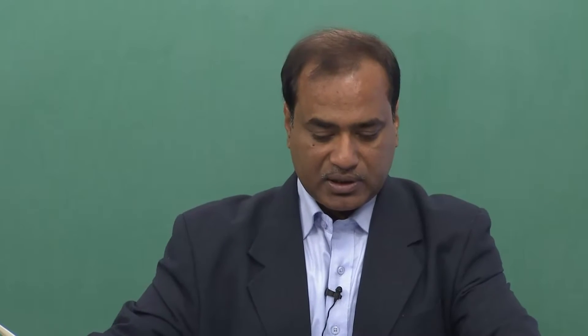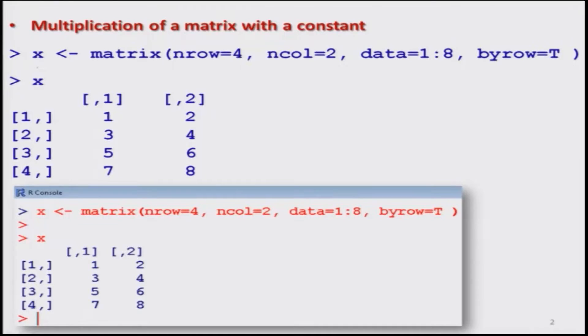Now we are going to explore some more topics on matrix manipulation. We will start with matrix multiplication, particularly when we are trying to multiply two matrices, and then we will see some more aspects like addition, subtraction, and other details about matrix operations. In the last lecture we had created a matrix of order 4 by 2 where the data was arranged in rows with numbers from 1 to 8.